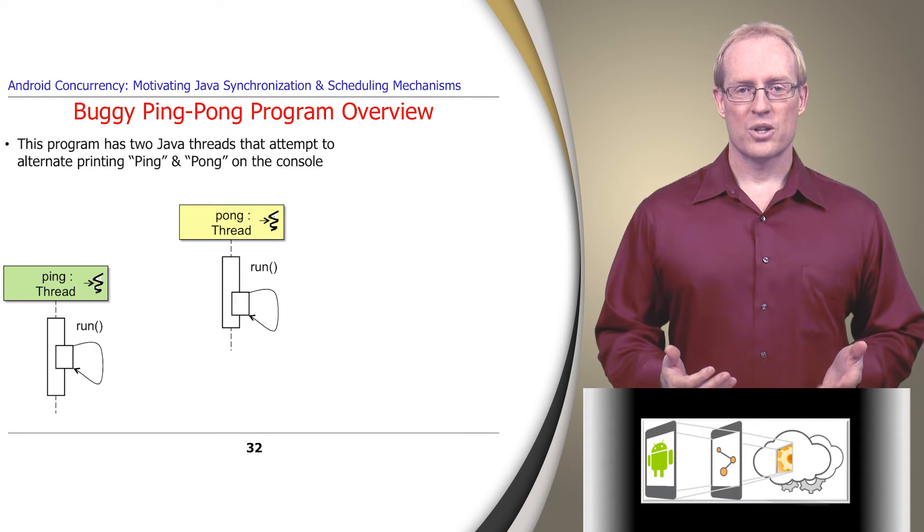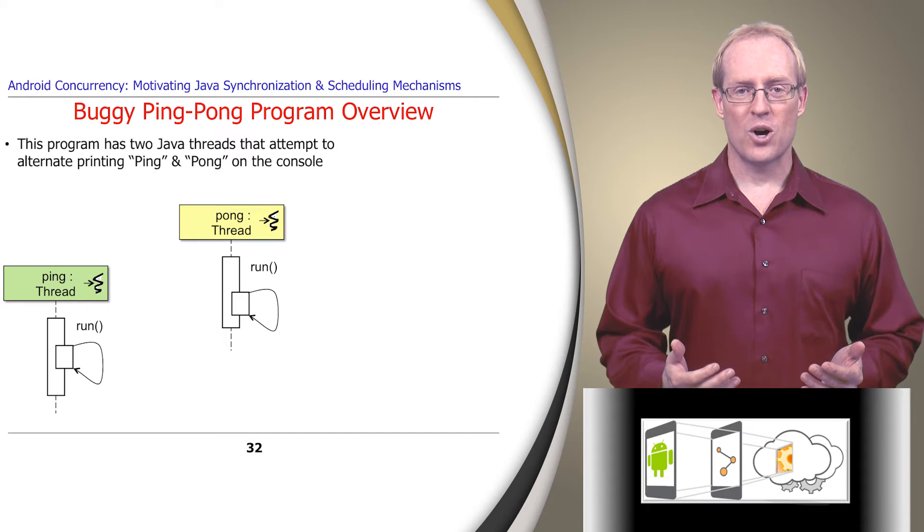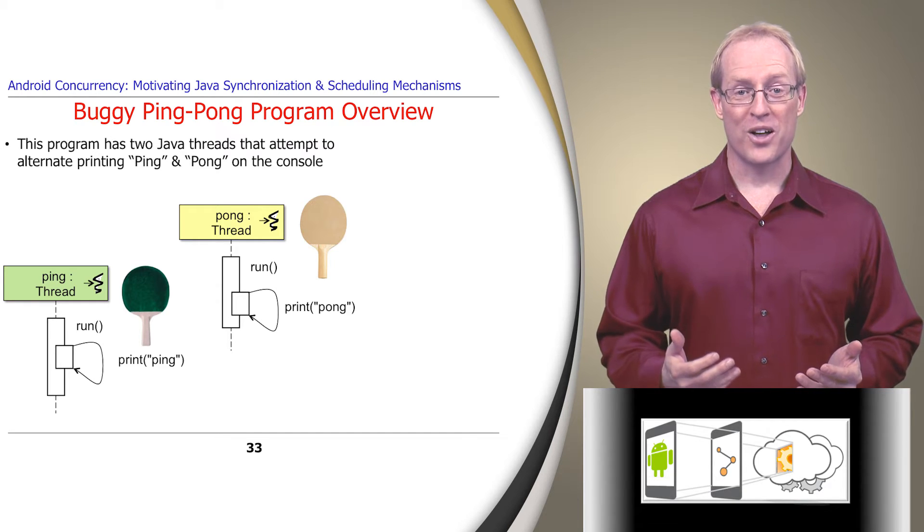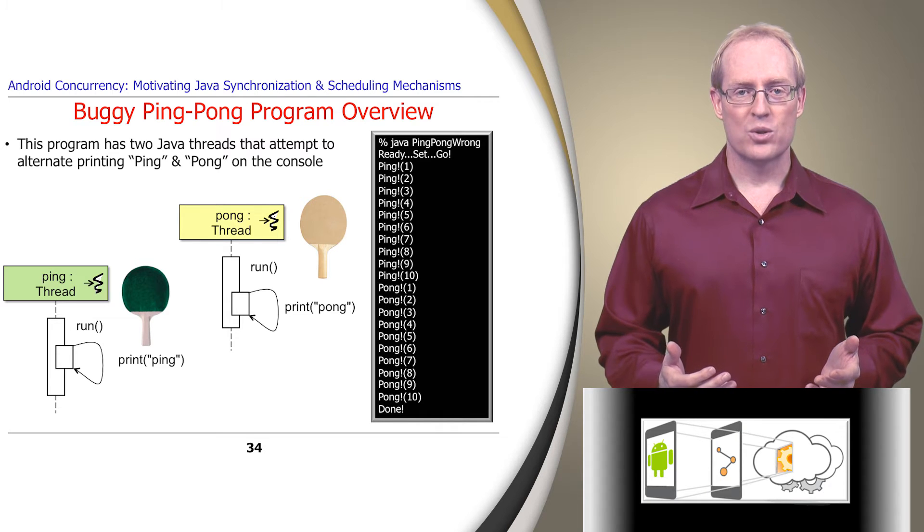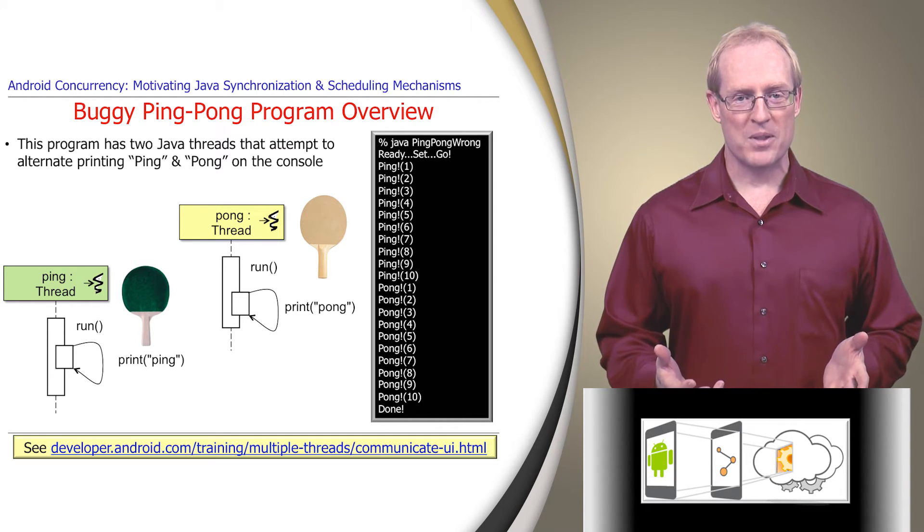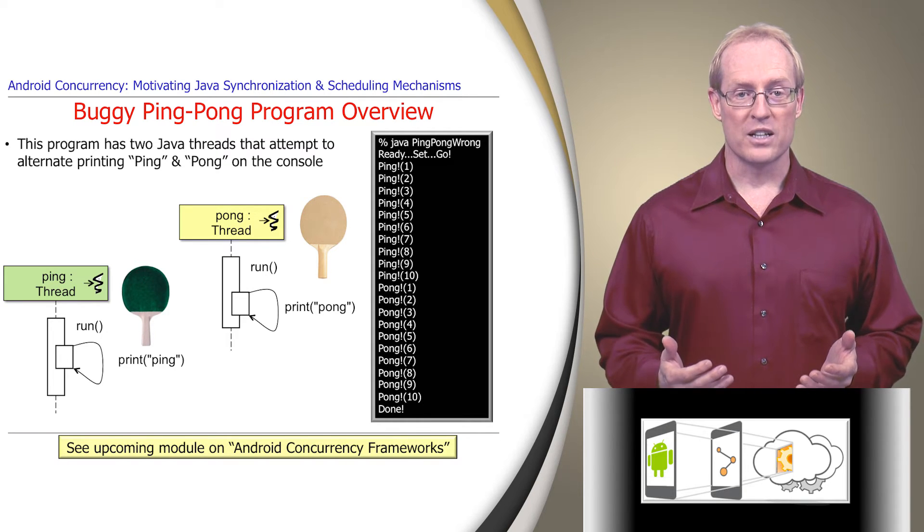Our second example shows how two Java threads can be created and used in an attempt to alternate printing ping and pong on the computer console. We use a Java console application to avoid dealing with some Android multi-threading design restrictions described at this link until after we've discussed its user interface threading model later in this section.